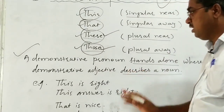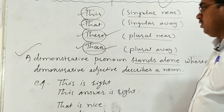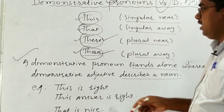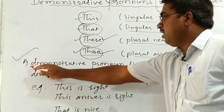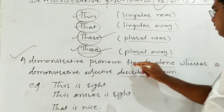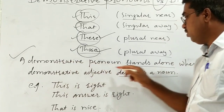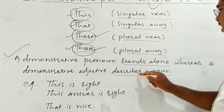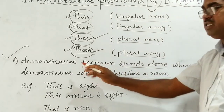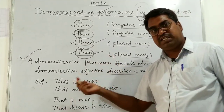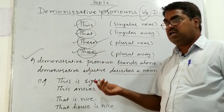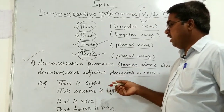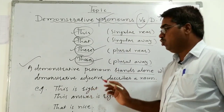This is the simplest way to distinguish between demonstrative pronouns and demonstrative adjectives. A demonstrative pronoun stands alone, whereas a demonstrative adjective describes a noun — it doesn't stand alone, it always precedes a noun. If the noun is singular, it will be 'this' or 'that'; if the noun is plural, it will be 'these' or 'those'.